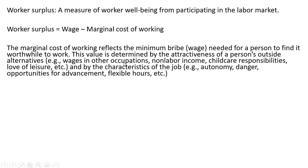For example, outside alternatives include wages in other occupations, non-labor income, child care, and family responsibilities, how much the person likes leisure, and also by the characteristics of the job — how much autonomy you get on the job, responsibilities, the danger a worker faces on the job, opportunities for advancement or training, flexibility in terms of hours of work, and so on.